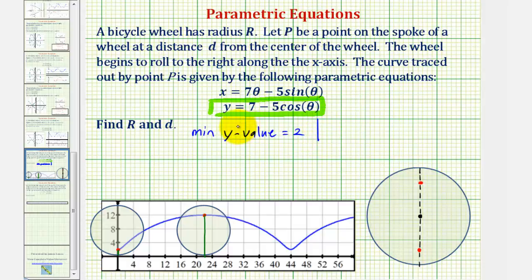And now to find the maximum y value, that would occur where cosine theta equals negative one, where we'd have seven minus five times negative one, which would be seven plus five or 12.